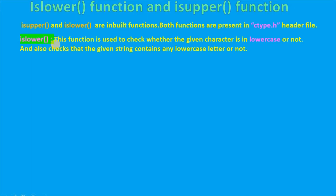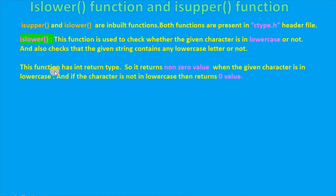isLower function: This function is used to check whether the given character is in lowercase or not, and also checks that the given string contains any lowercase letter or not. This function has int return type. It returns a non-zero value when the given character is in lowercase, and if the character is not in lowercase then it returns zero.